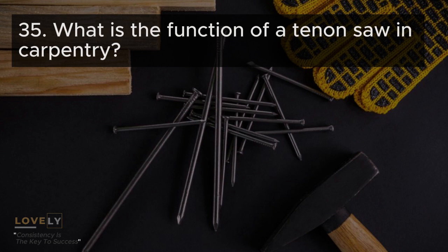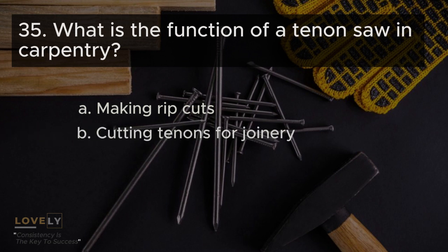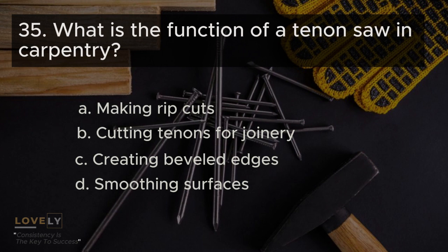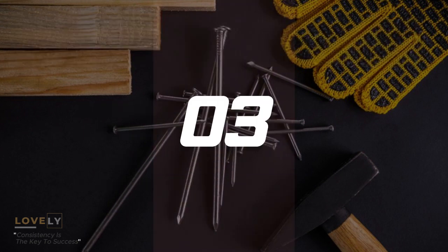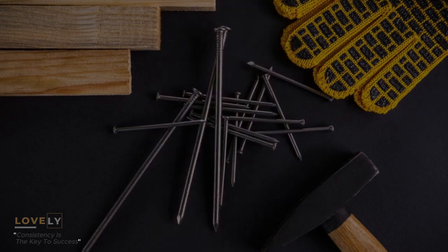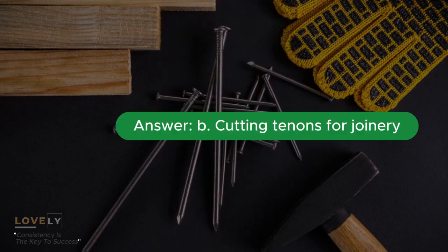Question 35: What is the function of a tenon saw in carpentry? A. Making rip cuts B. Cutting tenons for joinery C. Creating beveled edges D. Smoothing surfaces. Answer B. Cutting tenons for joinery.